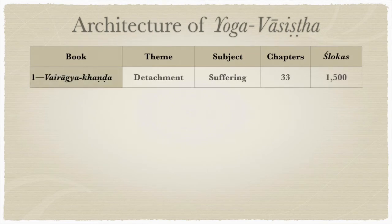The first book, which we've already been through, is Vairagya Khandha, based on the theme of detachment. The subject is human suffering — the human condition. It has 33 chapters and 1,500 shlokas or Sanskrit verses.